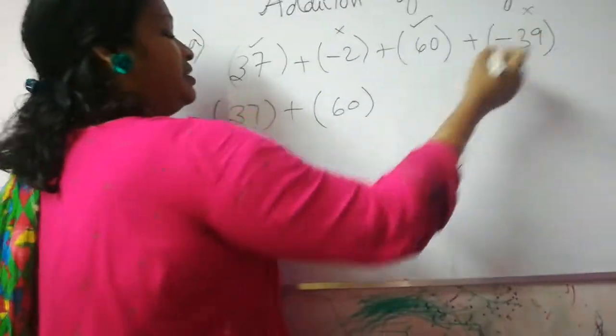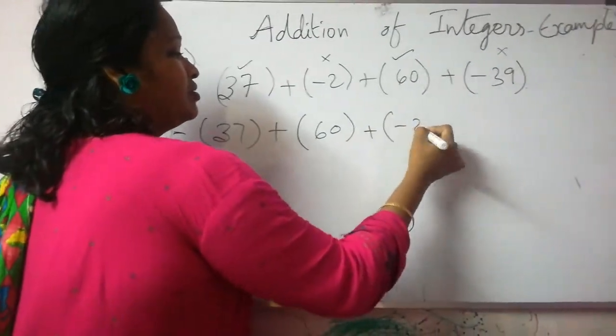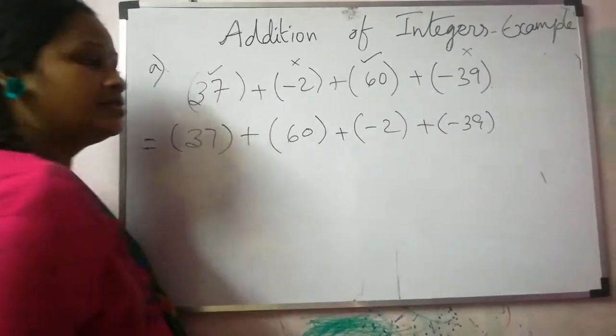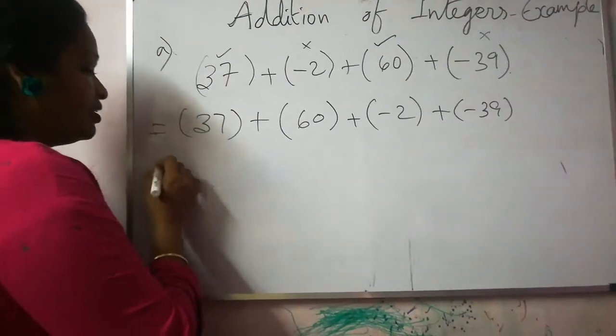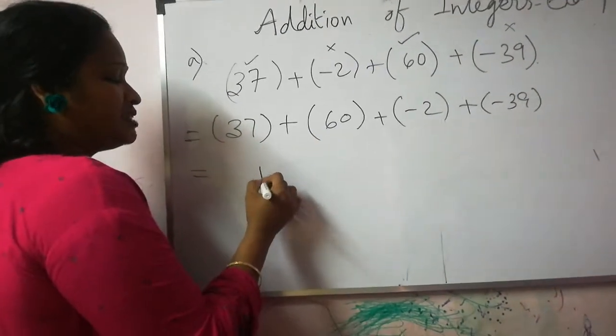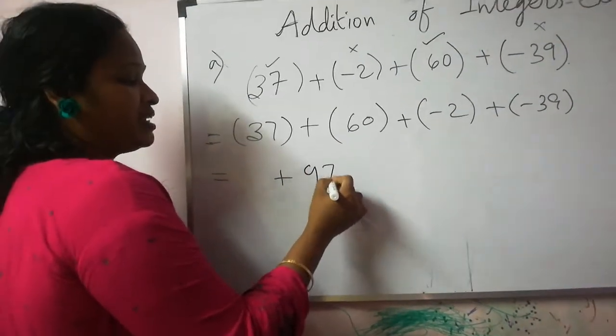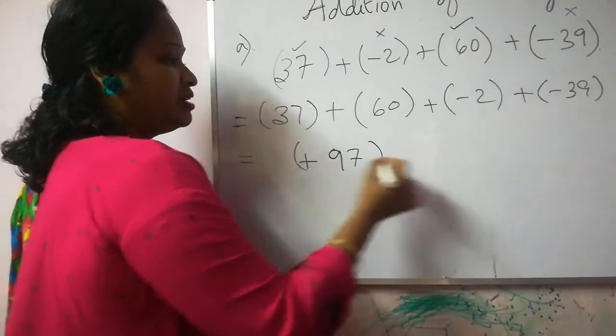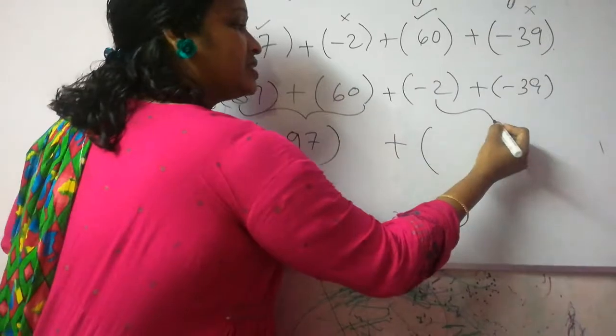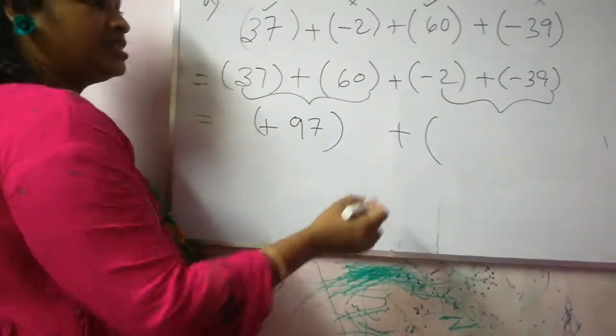Put the same sign integers together. Now add the same signs first. 37 plus 60 is plus 97. Got it children? Now add these two because they are the same sign.